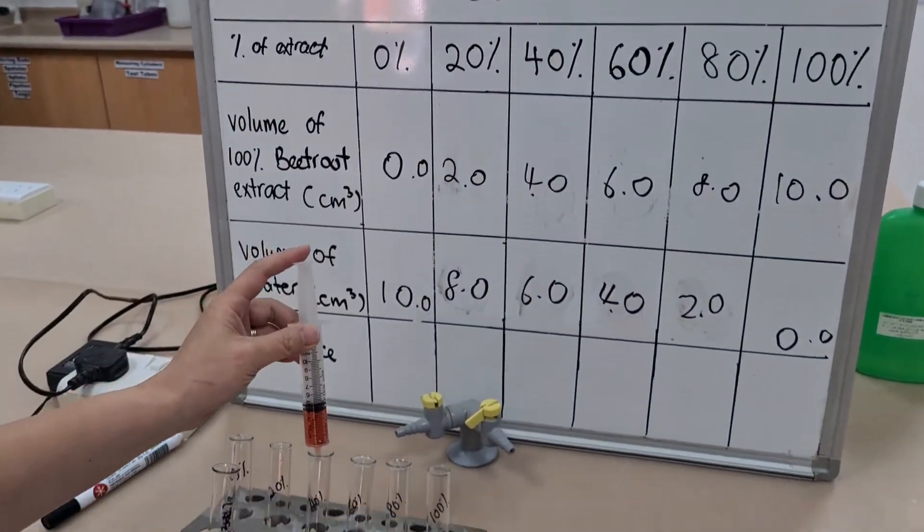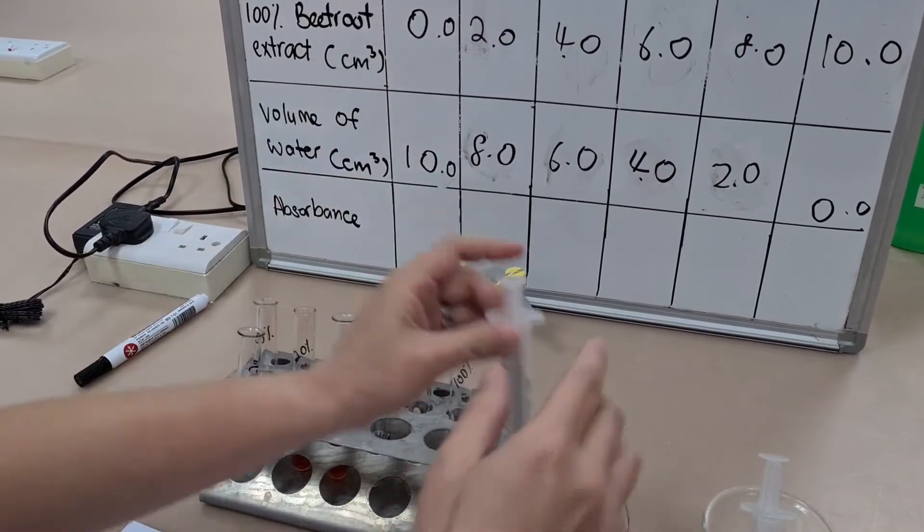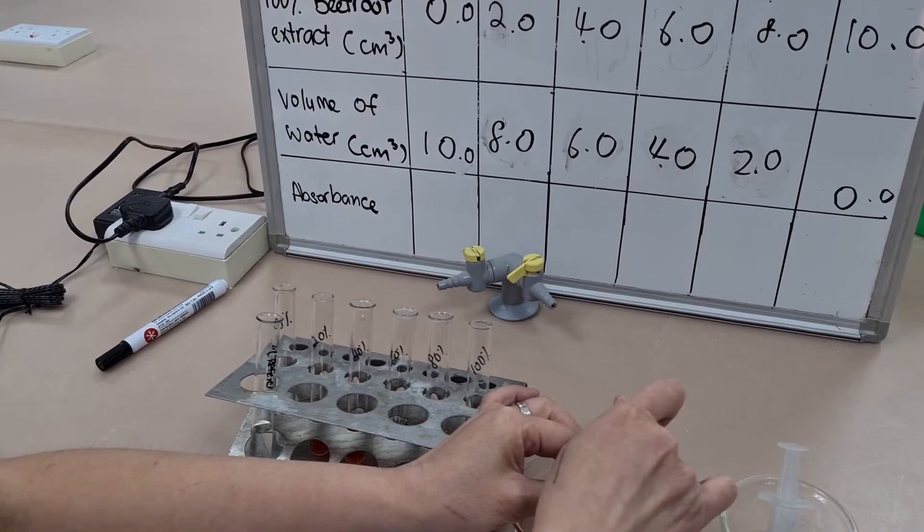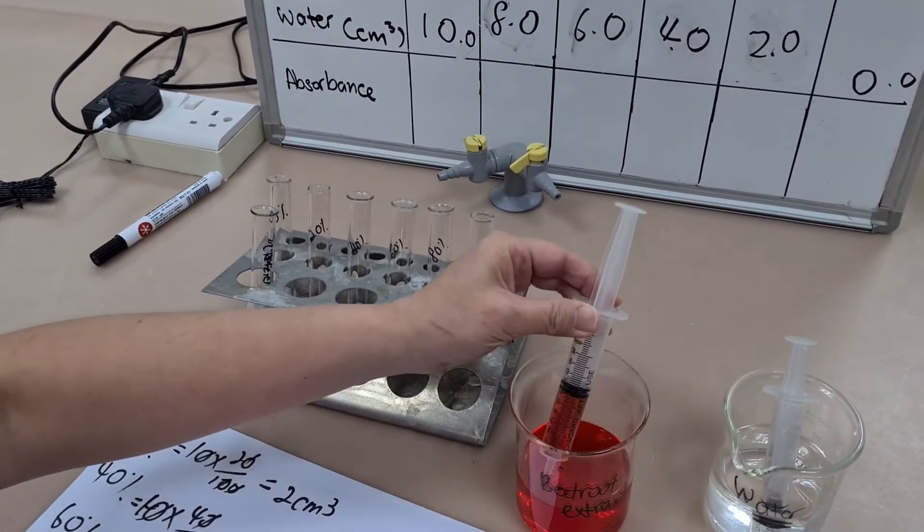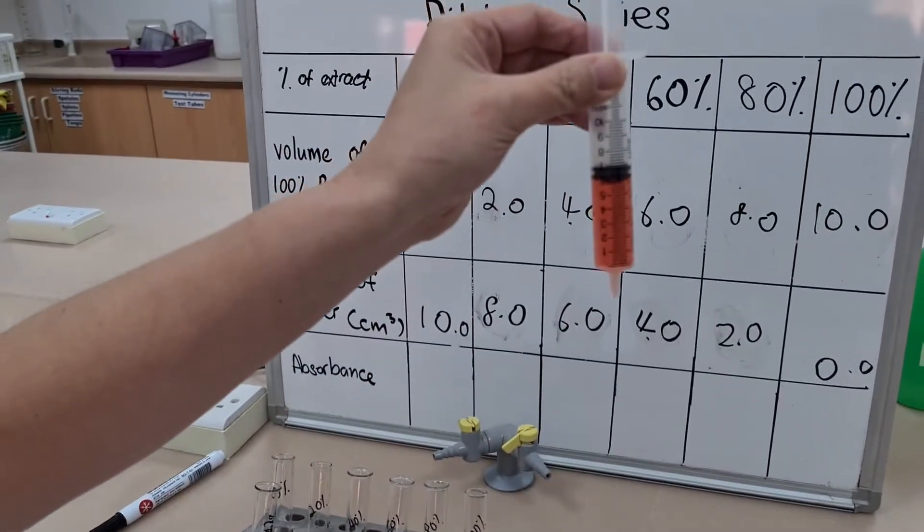Remember, it is one of the CPAC, one of the common practical assessed criteria, that you actually produce your table in advance of doing the actual experiment.